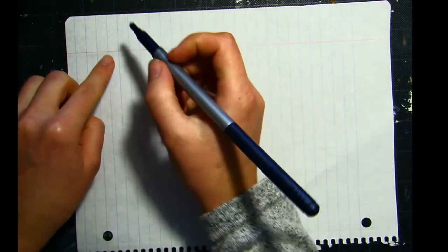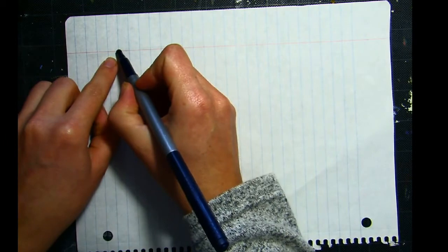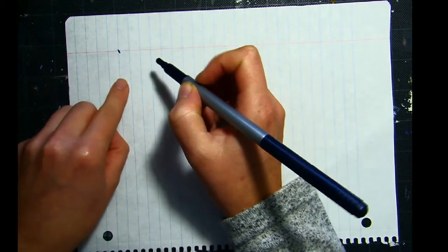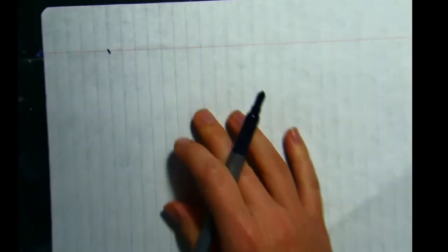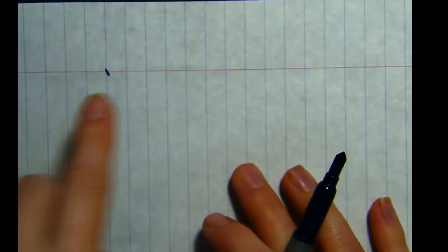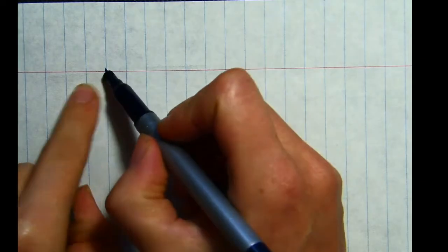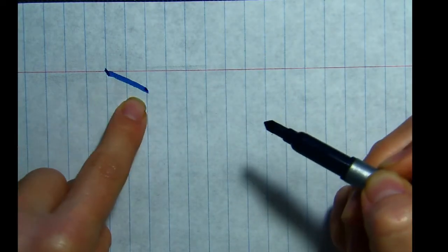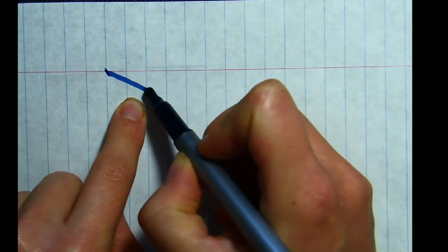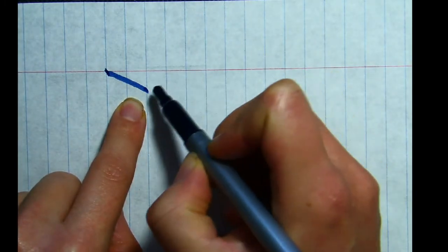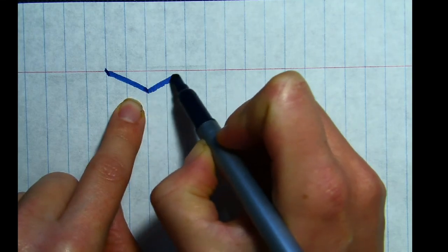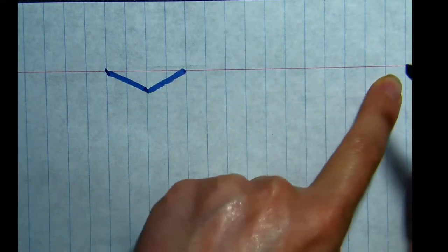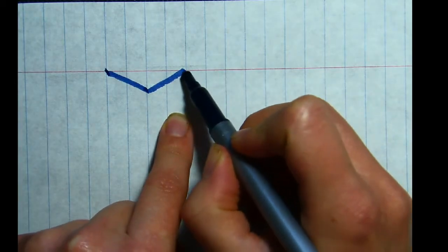And you're going to make zigzags that go down two spaces. So I have two spaces in between where I'm beginning and where I'm headed down at a diagonal. And then I'm going to take two more spaces to go back up to that red line. Just like that.